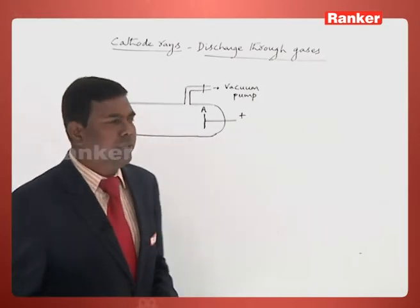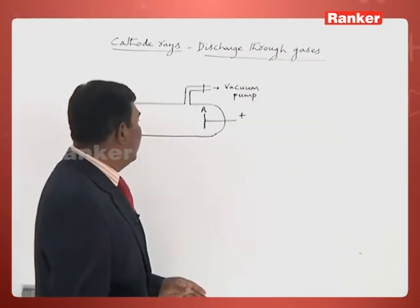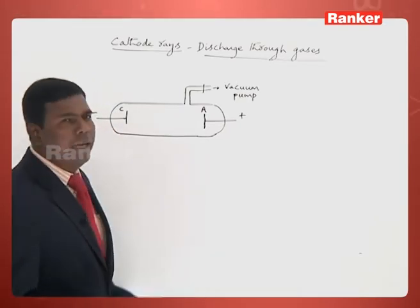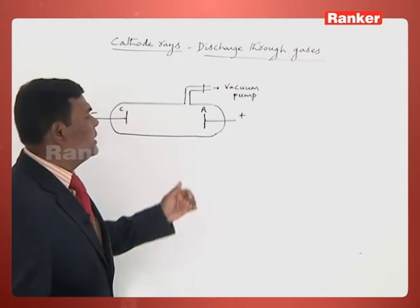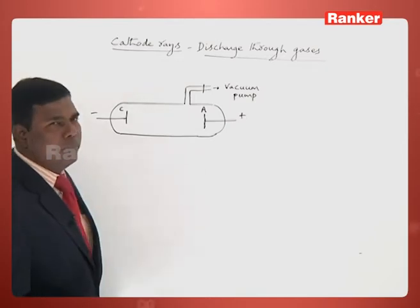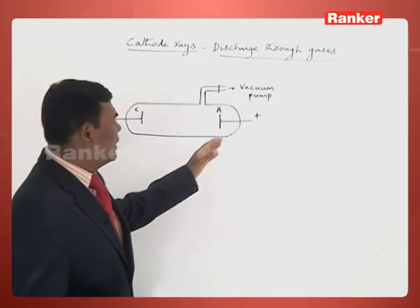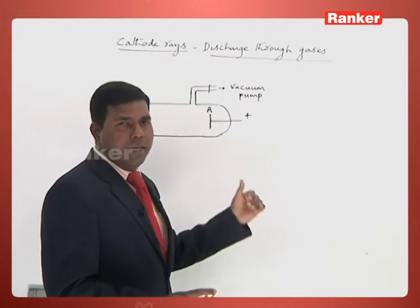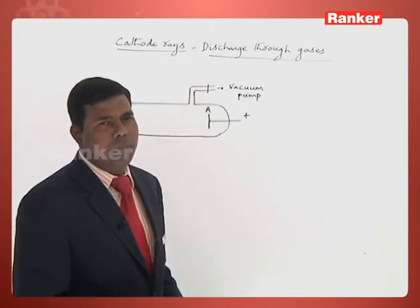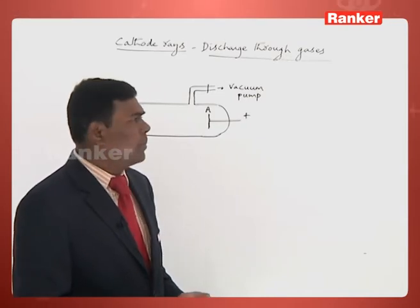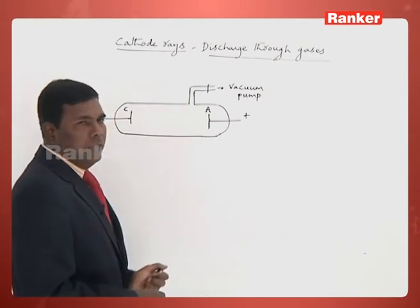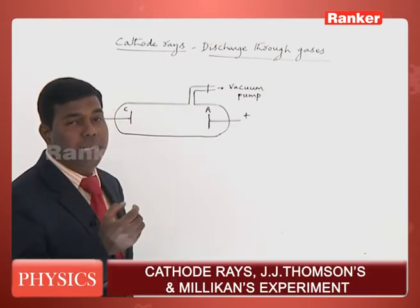Such a discharge tube is shown in the figure. It consists of a long tube of about 40 centimeters in length and about 4 centimeters in diameter. Two electrodes are placed inside the glass tube — one cathode and one anode. The cathode is connected to the negative terminal and the anode to the positive terminal of an external power supply.